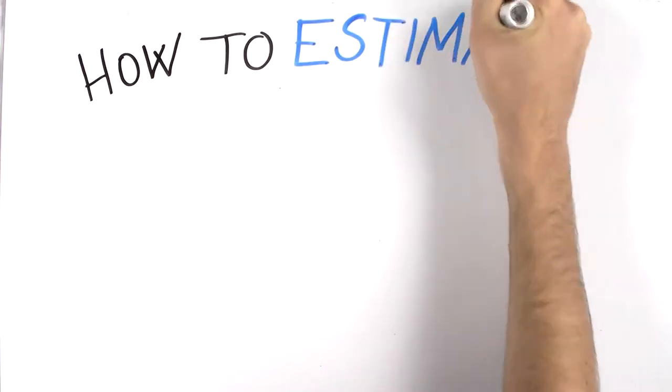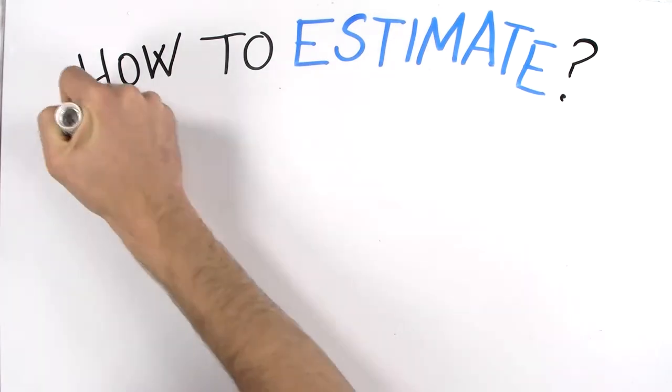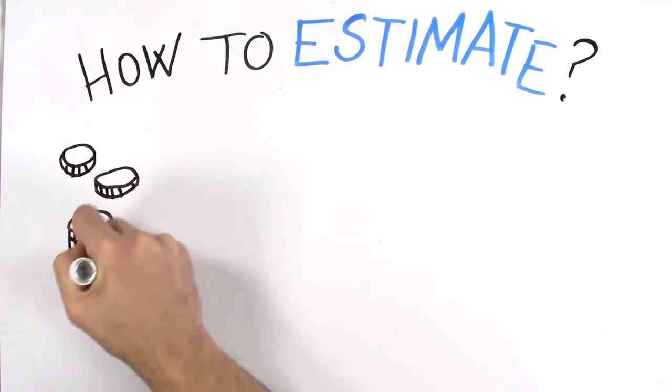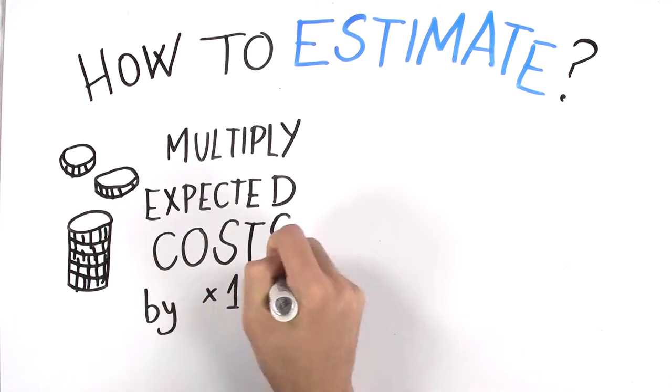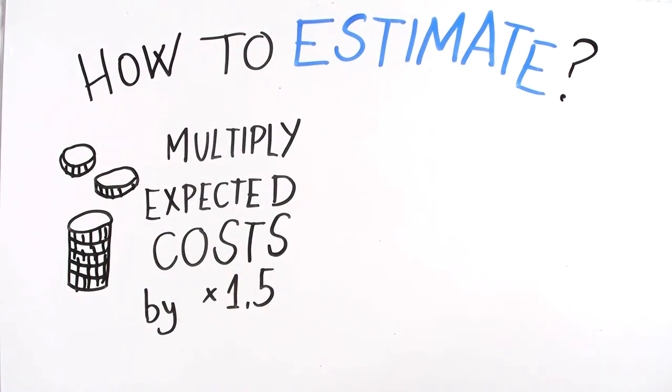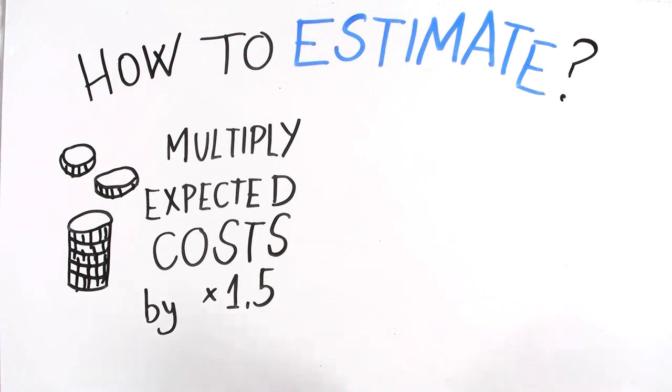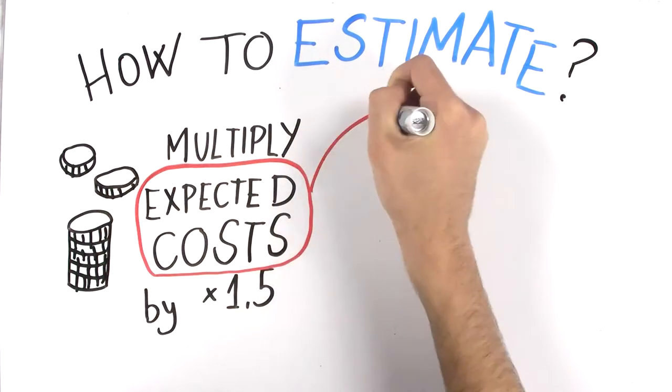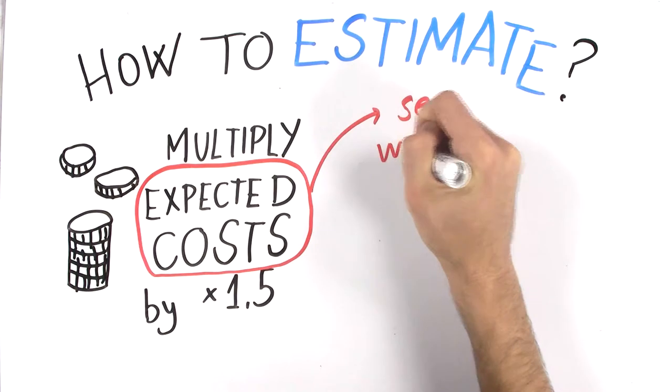First of all, to get an approximate estimate of all the expenses at the beginning, determine your major costs and multiply this number by one and a half. This is because things always end up costing much more than you anticipate and it's good to overestimate your costs. To get an idea of relevant costs, check out some of the wikis of previous iGEM teams.